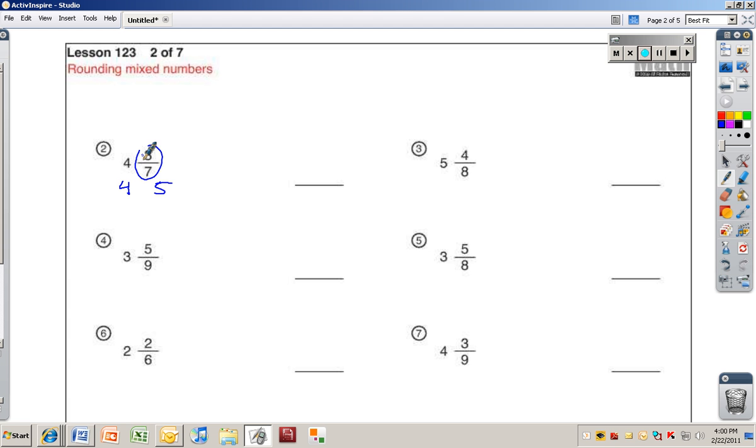Smaller. If it was a half, what's half of 7? Wait, 3 and a half. 3 and a half, right? Or 3.5. Is this bigger or smaller than 3 and a half? It's smaller than 3 and a half, right? So that means this is smaller than the fraction 1 half. Okay, so since it's smaller than a half, we're going to round that down to 4.